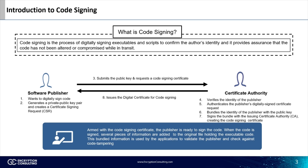First, a software publisher who wants to digitally sign code will generate a public-private key pair and create a CSR, or certificate signing request. They will submit the public key and CSR to a certificate authority, who will verify the identity of the publisher and authenticate the publisher's digitally signed certificate request. Then they will bundle the identity of the publisher with a public key and sign the bundle with their issuing CA certificate, creating a code signing certificate that will be issued to the software publisher for code signing.